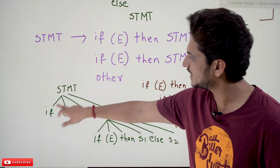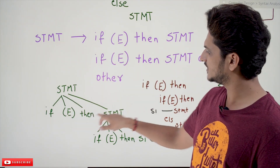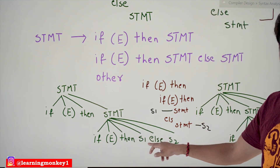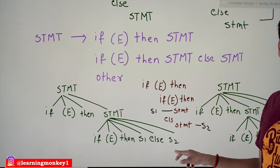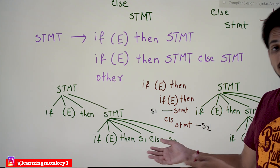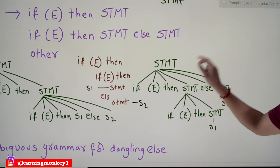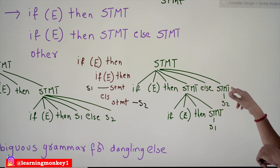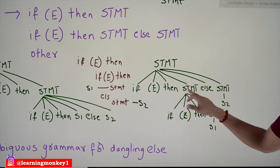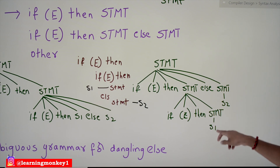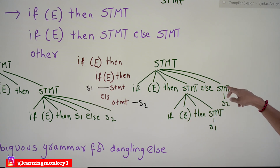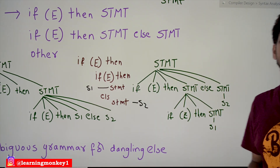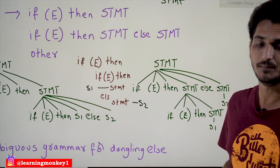One way: statement → if expression then statement, and elaborating that inner statement as if expression then S1 else S2. But there is another option: statement → if expression then statement, where the inner statement becomes if expression then S1, and S2 is given to the outer if as its else. This is what we call the dangling else problem, caused by this ambiguous grammar.